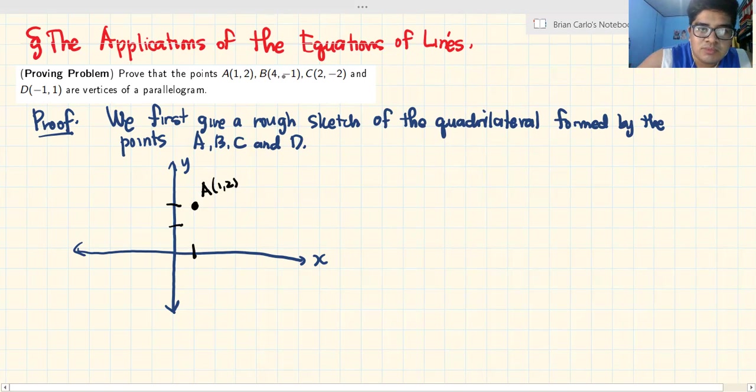Susunod, yung B naman, 4, negative 1. This is 2, 3, 4. This is negative 1. So, ito yung susunod na point. This is B (4,-1).